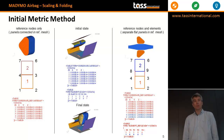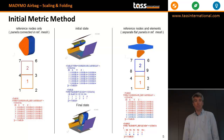Here you see a passenger airbag worked out in more detail. In the middle you see the initial state — it's a scaled airbag. It contains coordinates and it contains ref elements. At the bottom picture you see the inflated state.